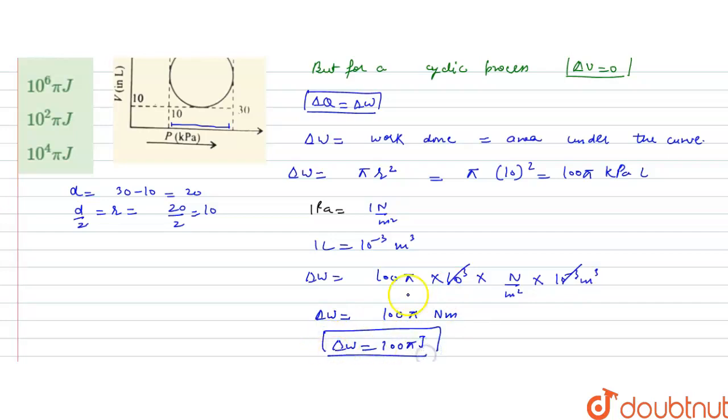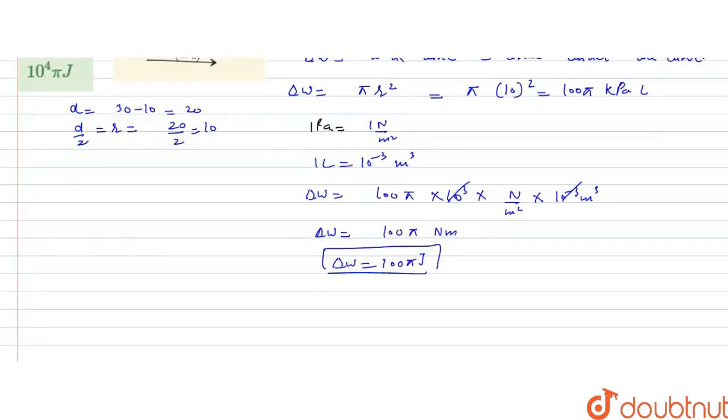And for cyclic process, the delta W will be equals to delta Q. So, delta Q will be equals to delta W, that is, 10 to the power 2 pi Joule.